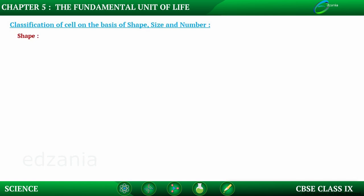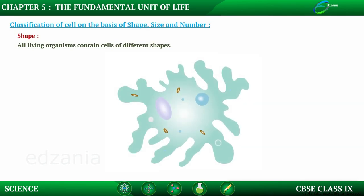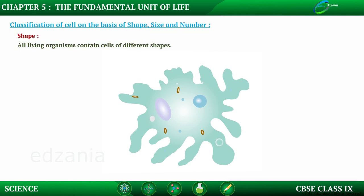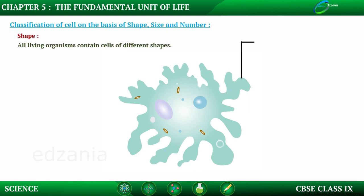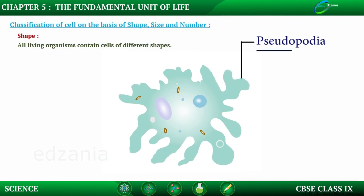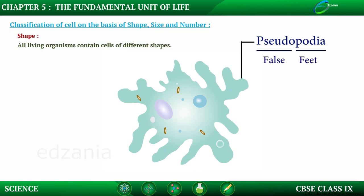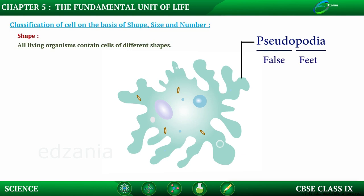Different types of cells have different shapes. Amoeba, which is a unicellular organism, has no definite shape — it keeps changing its shape. Projections of various lengths produce out of the body of the amoeba, which are called pseudopodia. 'Pseudo' means false and 'podia' means feet. These false feet or pseudopodia help the amoeba to move and capture its food.